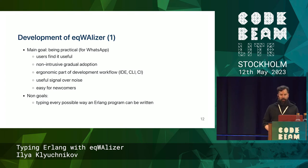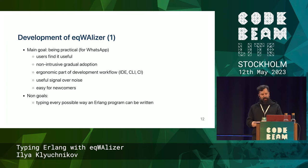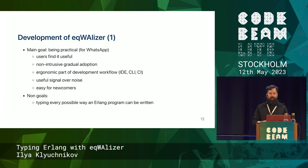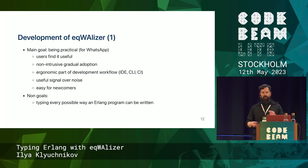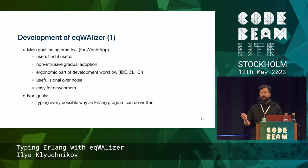Our main goal in developing this type checker was to make it practical for WhatsApp. Being practical means users are happy, users find it useful, and it is possible to adopt it gradually — you don't need to stop the world to adopt it, you can do it step by step. We also wanted to make it an ergonomic part of our development workflow. We use it from inside the IDE, from the command line, and it is an organic part of our CI.